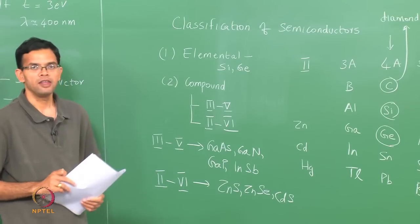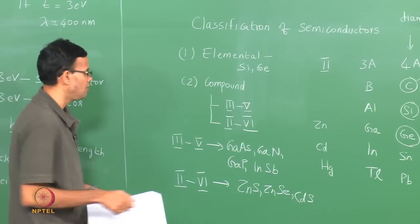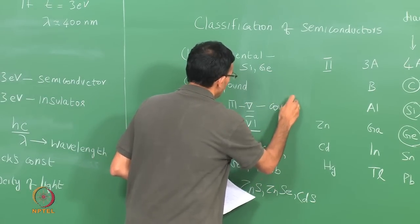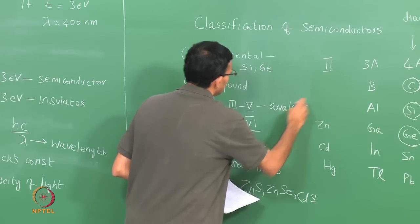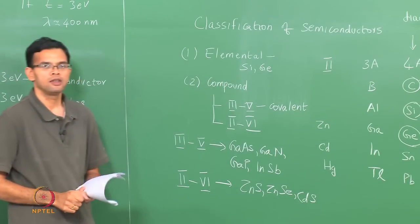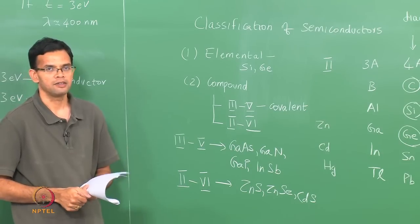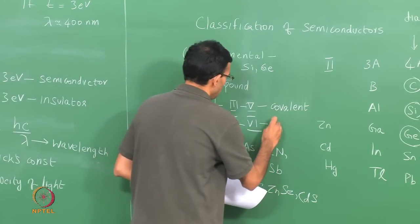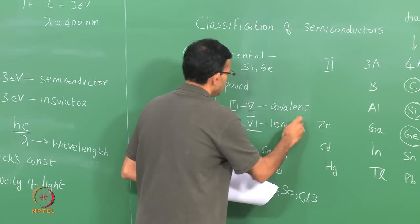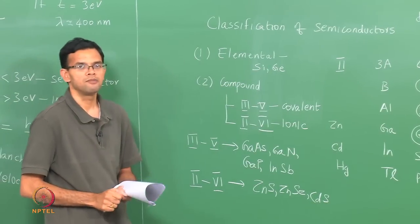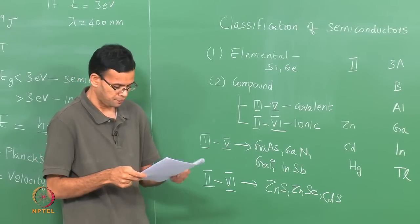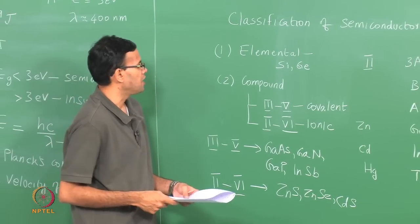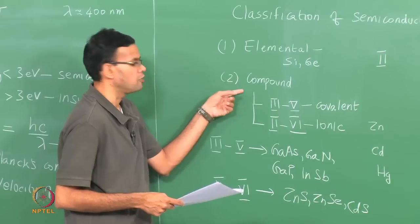Looking at bonding character in compound semiconductors: 3-5s mainly have covalent bonding with some ionic character. In the case of 2-6s, the main bonding is ionic with some covalent character. This is one way of classification — elemental versus compound.